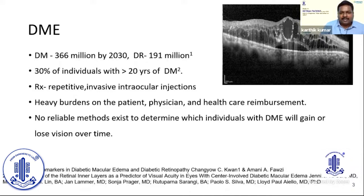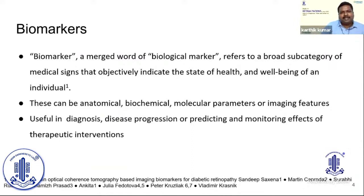There are currently no reliable methods to determine which individual with DME is going to have good vision over a period of time. These unmet needs can be answered by biomarkers — a merged term for biological markers — which refer to parameters that can be objectively measured to indicate the state of health and well-being of an individual. They can be anatomical, biochemical, molecular, or in DME, imaging-based.